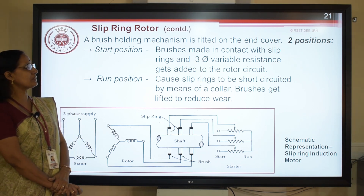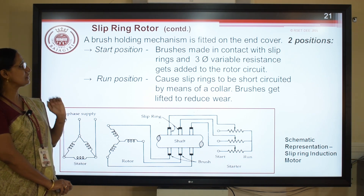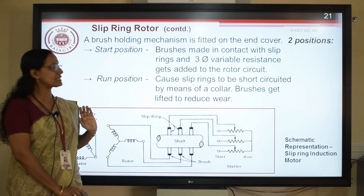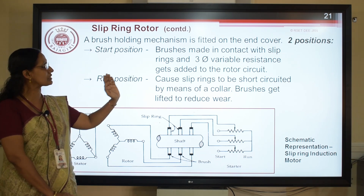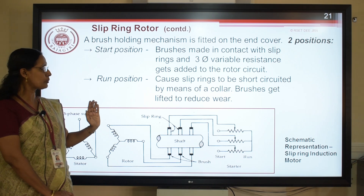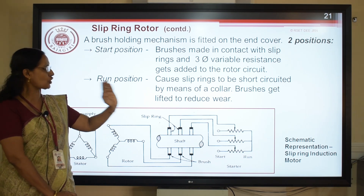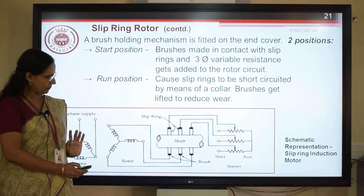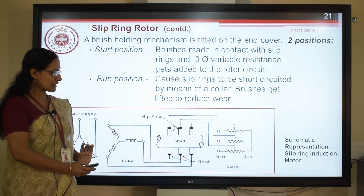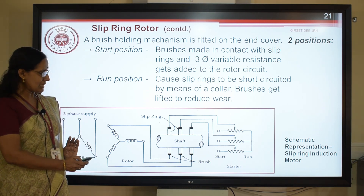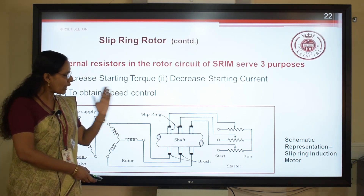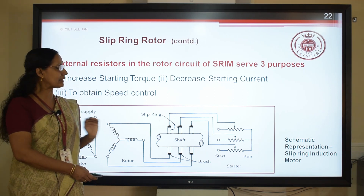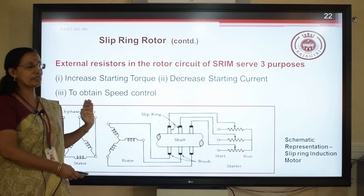A brush holding mechanism is fitted onto the end cover. It has two positions: the start position and the run position. In the start position, the brushes come in contact with the slip rings and the three-phase variable resistance gets added to the rotor circuit. The run position causes the slip rings to be short-circuited by means of a collar, and the brushes also get lifted to reduce wear. The figure shows the schematic representation of a slip ring induction motor. The need for external resistors is to increase starting torque, decrease starting current, and to obtain speed control.